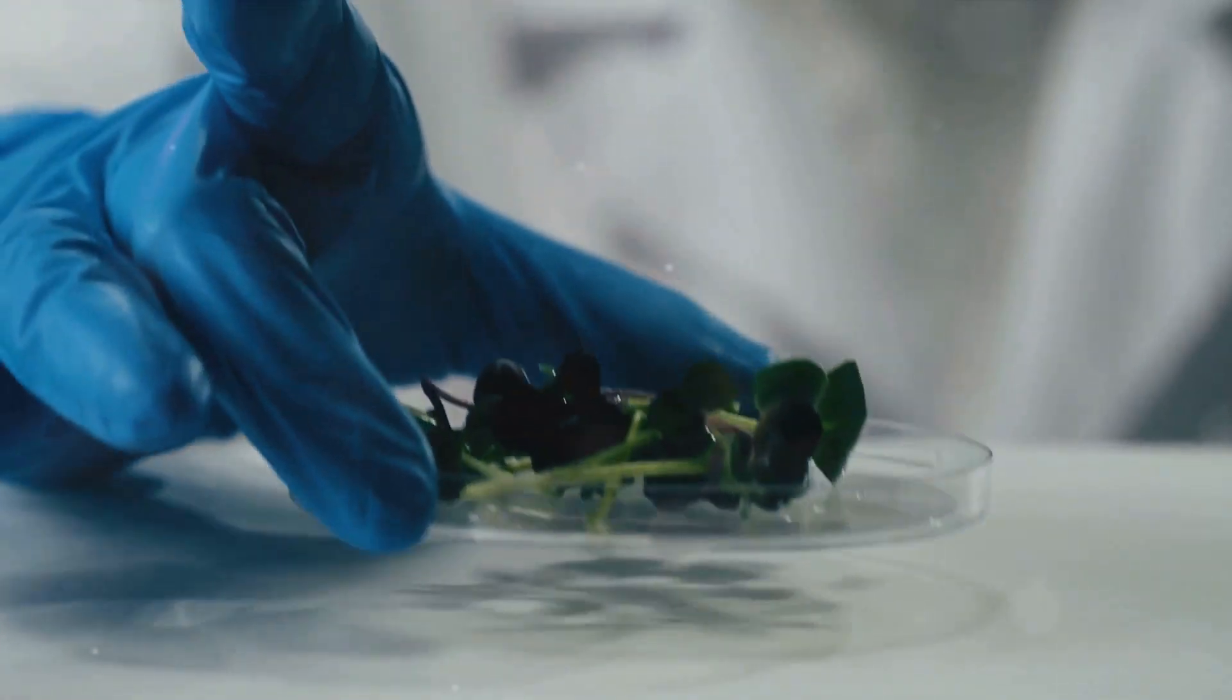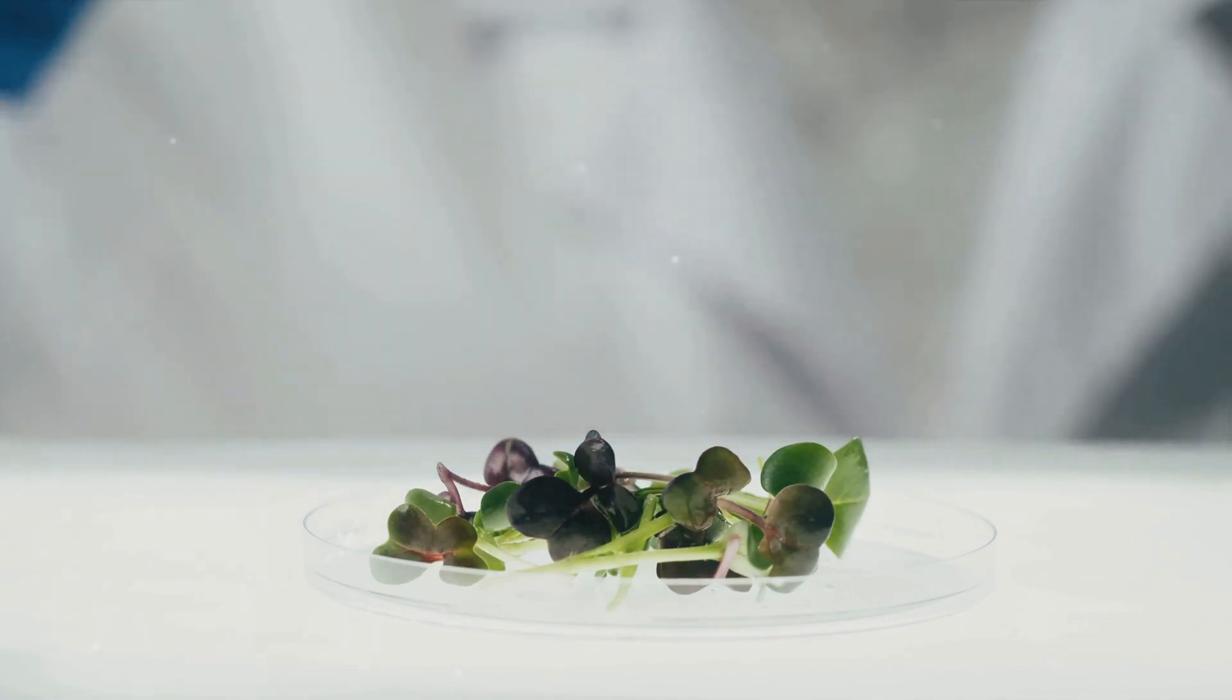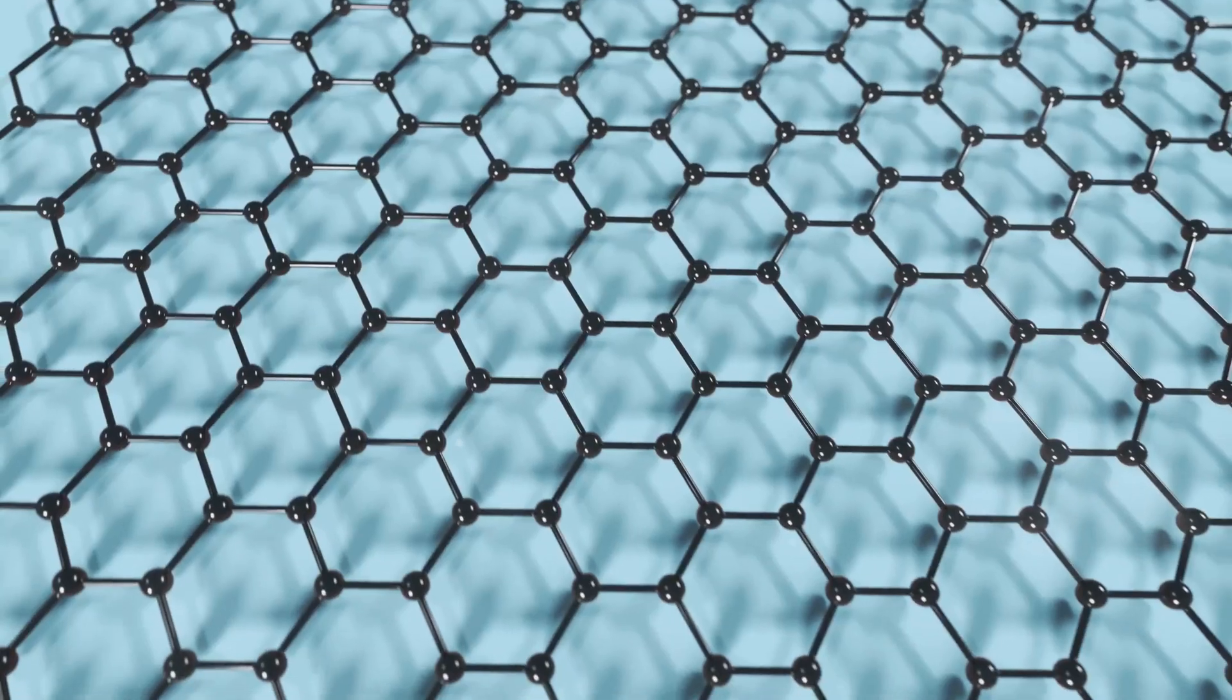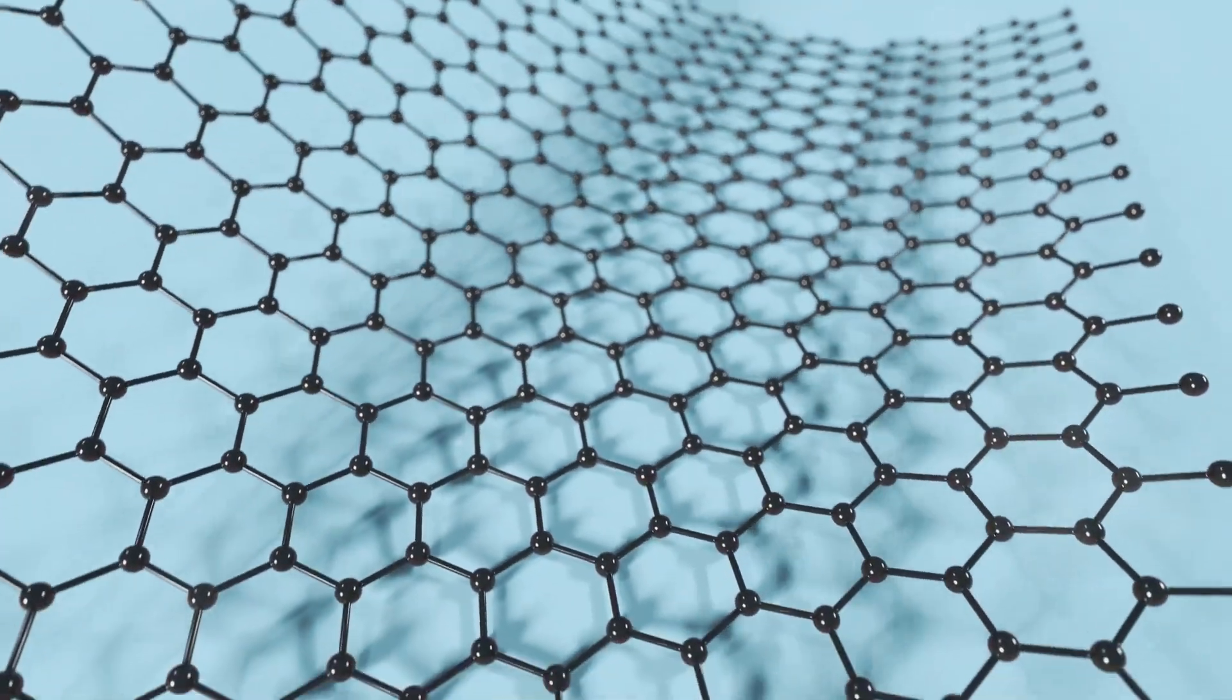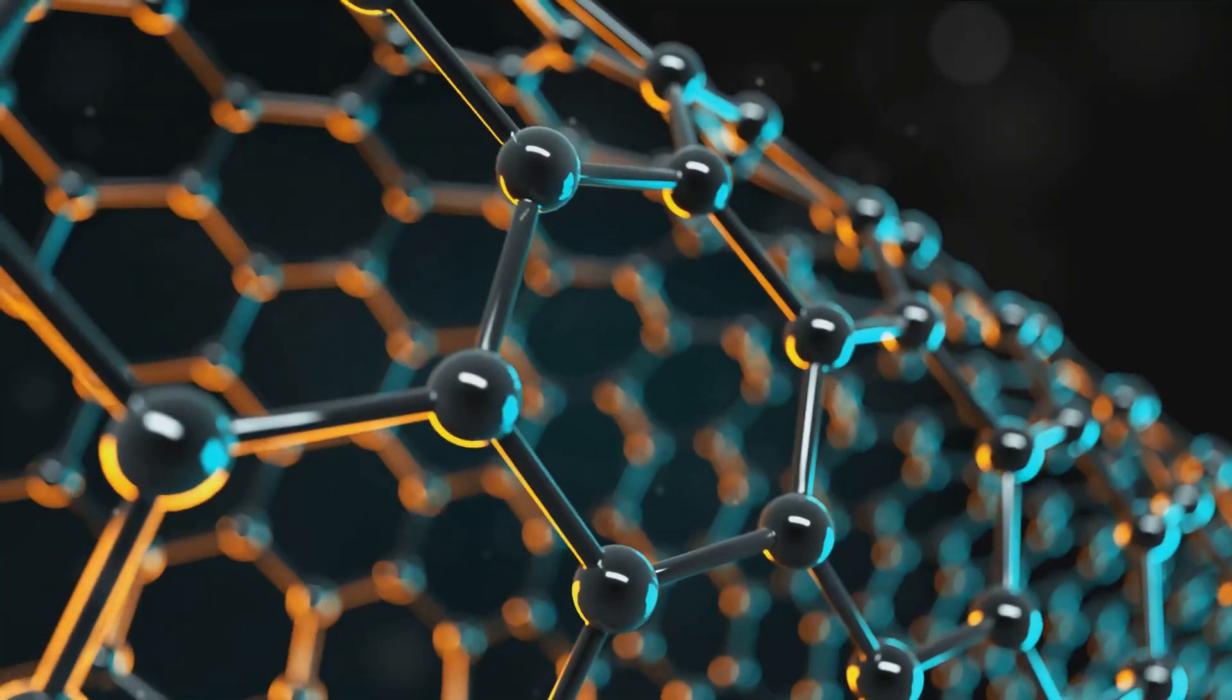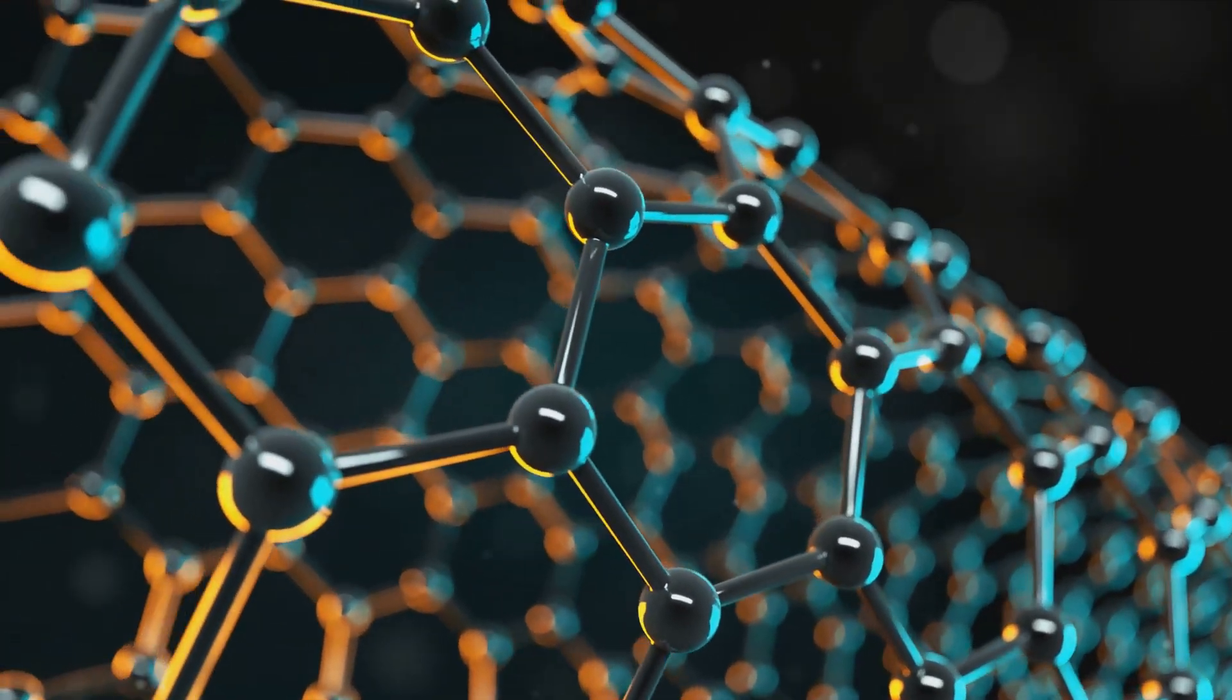Nanotechnology is the study and application of extremely small things that exist at the nanoscale. That's 1 to 100 nanometers. To put that into perspective, a sheet of paper is about 100,000 nanometers thick. It's the science of the incredibly tiny, smaller than a single strand of human hair.